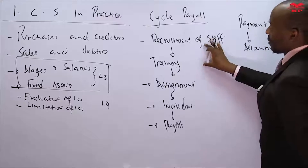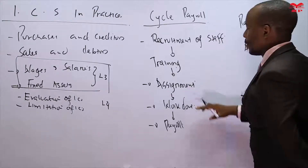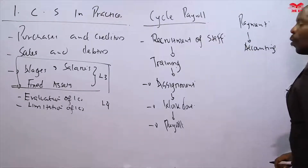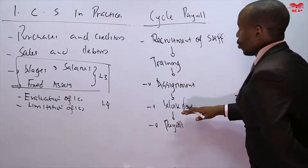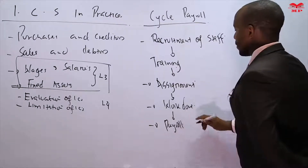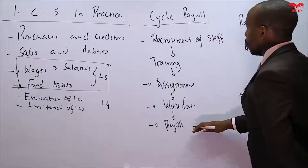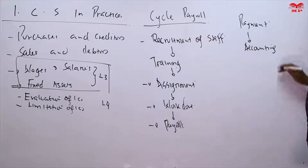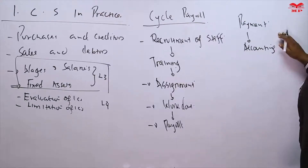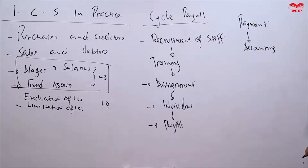So the cycle covers: employment of staff, assignment to where you are supposed to work according to your competency, accumulation of work done, preparation of the payroll, the payment schedule, making the actual payment, and accounting for that payment as wages and salaries.